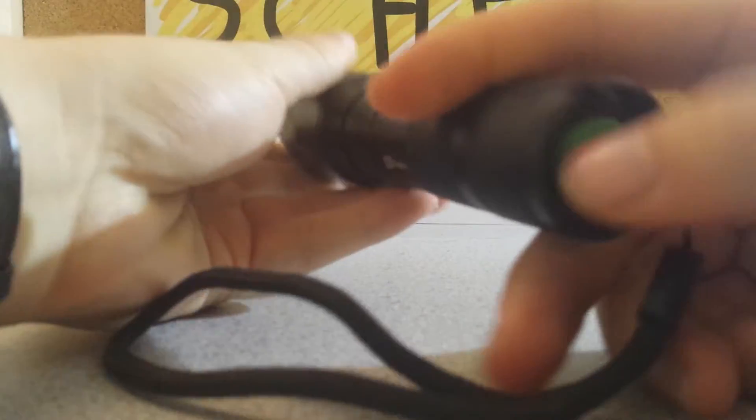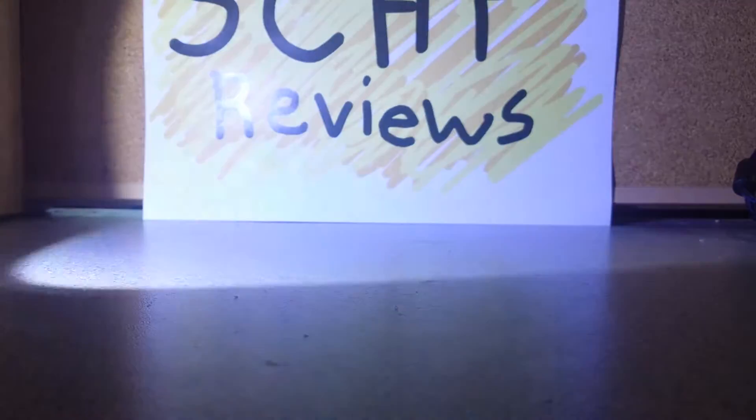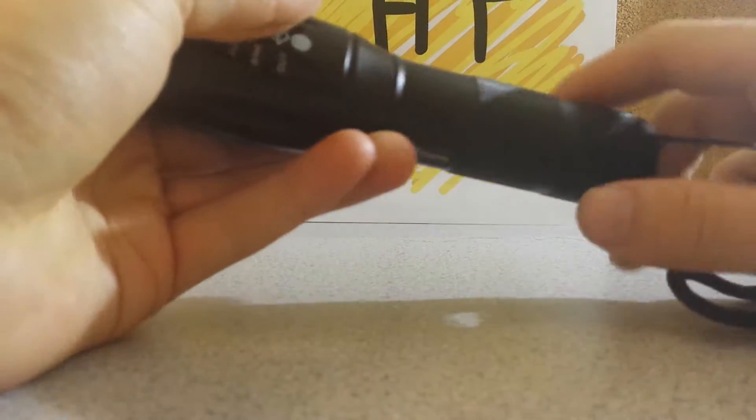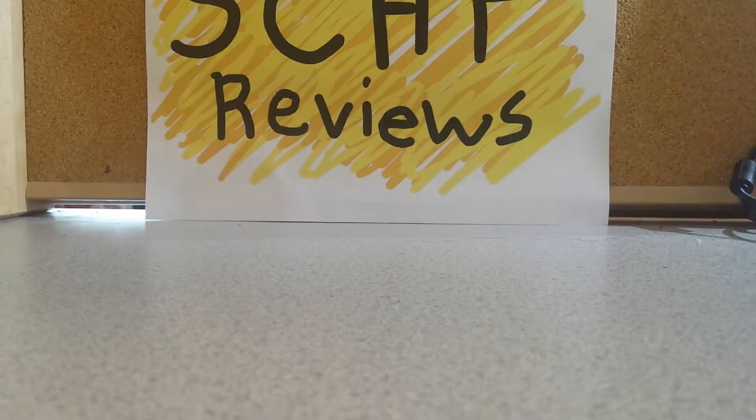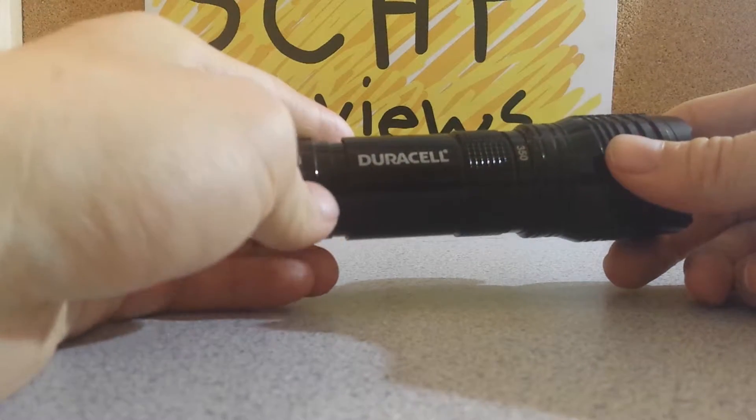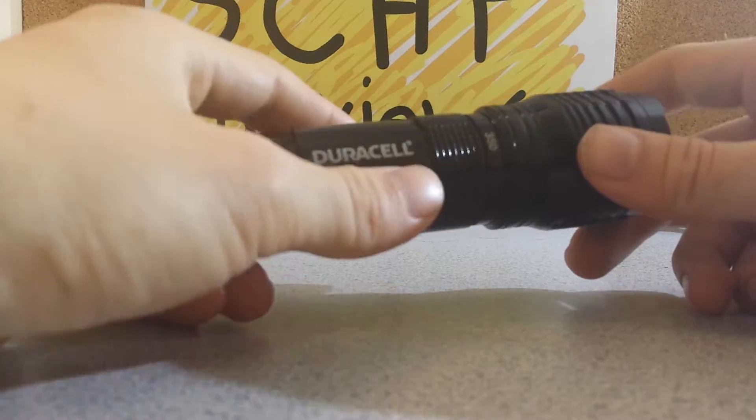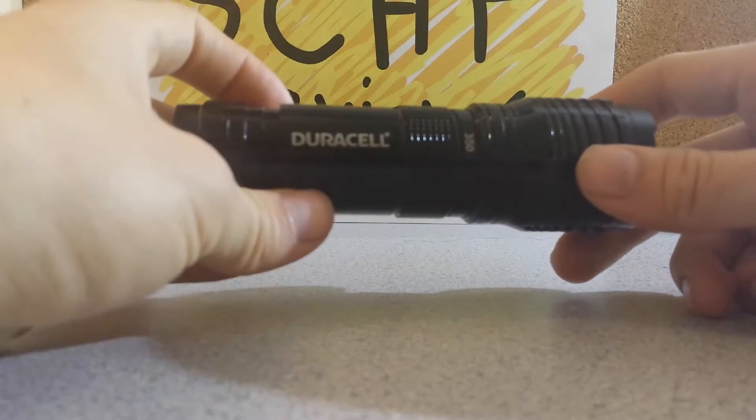It zooms in and out, as you can see right here. And so, this is the thing. This light is advertised at 1200 lumens. Now, I have a control flashlight, the Duracell DuraBeam Ultra 350, which I know outputs 350 lumens, as stated by Duracell.